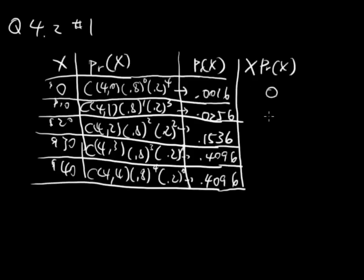10 times this is 0.256, 20 times this is 3.072, 30 times 0.4096 is 12.28, and 40 times this is 16.384. And these are numbers I've calculated using the calculator,